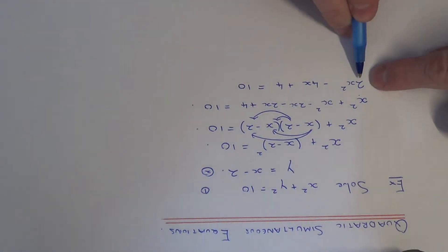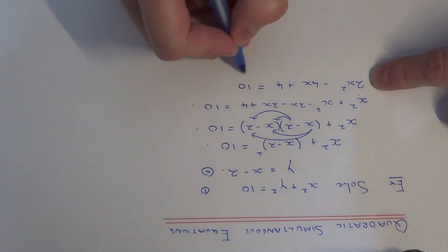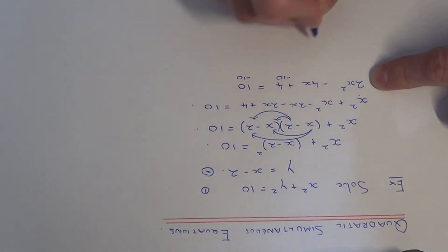Now you should notice that we have a quadratic equation here. So we need to write this in the form ax squared plus bx plus c equals 0. So we just need to get rid of the plus 10 off the right-hand side so it's equal to 0.